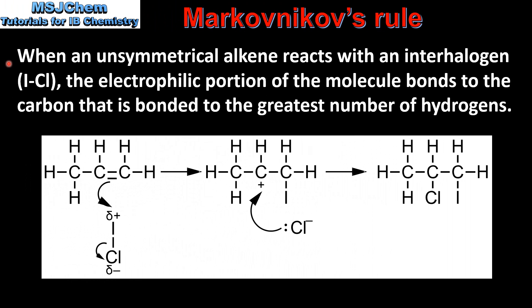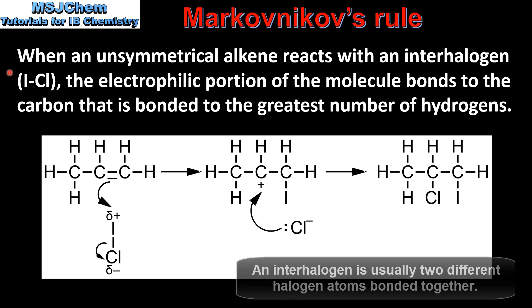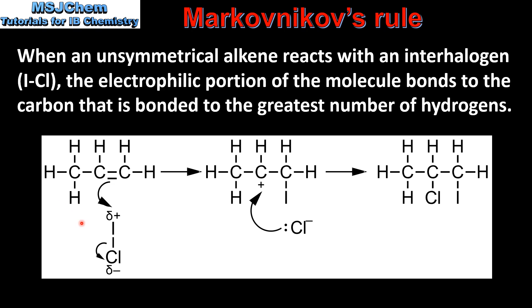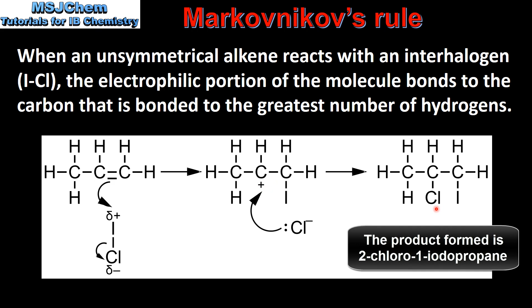Next we'll use Markovnikov's rule to predict the product between an unsymmetrical alkene and an interhalogen — two halogens bonded together. The electrophilic portion of the molecule bonds to the carbon bonded to the greatest number of hydrogens. In this reaction, propene reacts with iodine monochloride. Because chlorine is more electronegative than iodine, chlorine has a negative dipole and iodine has a positive dipole. The iodine is the electrophilic portion and bonds to the carbon already bonded to the greatest number of hydrogens, forming a secondary carbocation. The chloride ion then uses its lone pair of electrons to bond with that carbon atom, and the final product is 2-chloro-1-iodopropane.